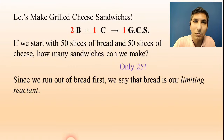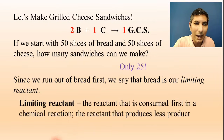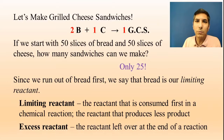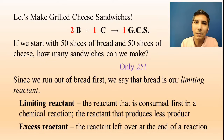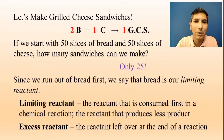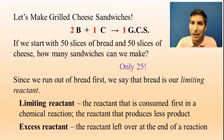After you've made your 25 sandwiches, you're going to have a bunch of cheese left over. Since you have excess cheese, we call that the excess reactant. The reactant that's consumed first, or the one that produces less product, is called the limiting reactant. And the reactant that's left over at the end of the process is called the excess reactant. We're going to do a couple of problems where one reactant runs out first — that's the limiting reactant.